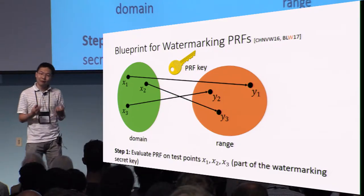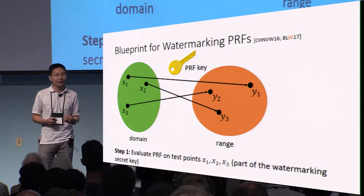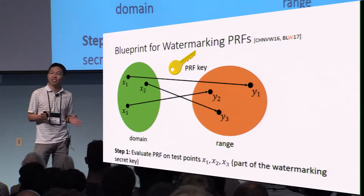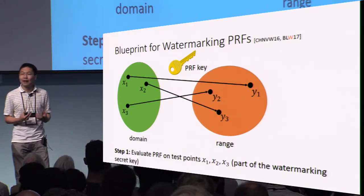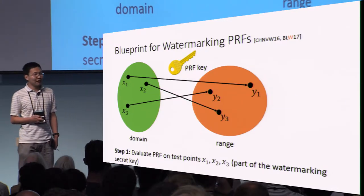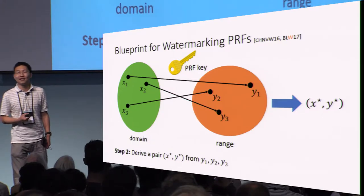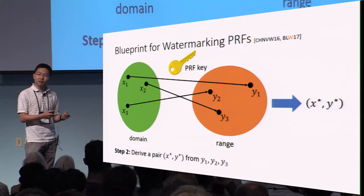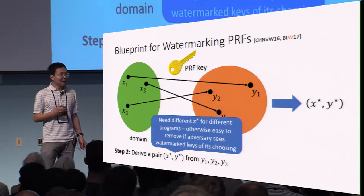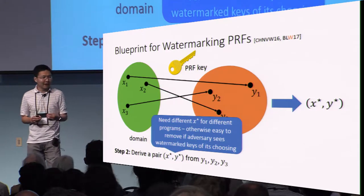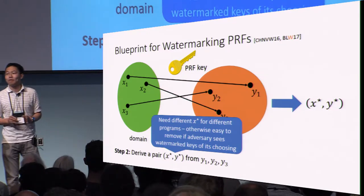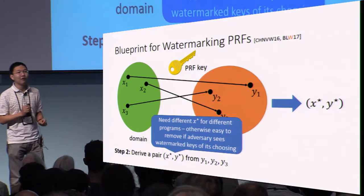The blueprint works as follows. Our target is to watermark a PRF. The first thing we're going to do is take our pseudo-random function and evaluate it at a bunch of test points, which are embedded as part of the master secret key of the watermarking scheme. Based on this output behavior of the PRF, we're going to derive a new point x* and y*. It is actually critical that x* is derived based on the behavior of the pseudo-random function — the reason for this will become clear later.